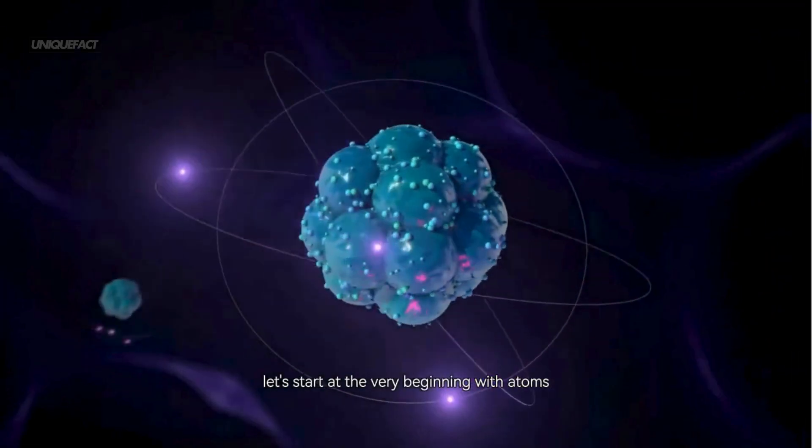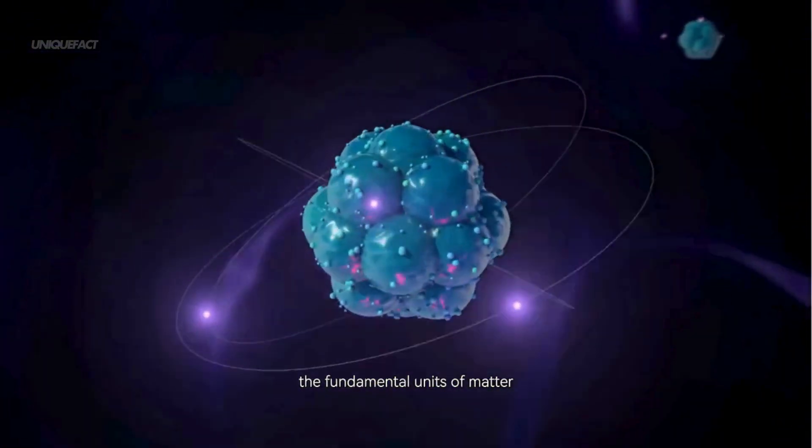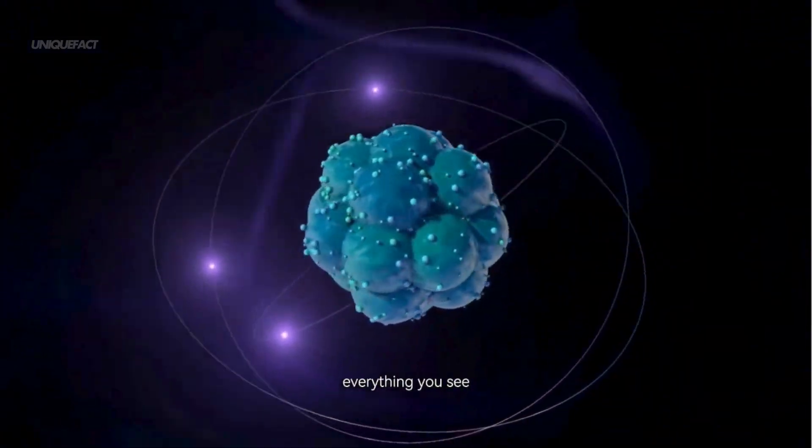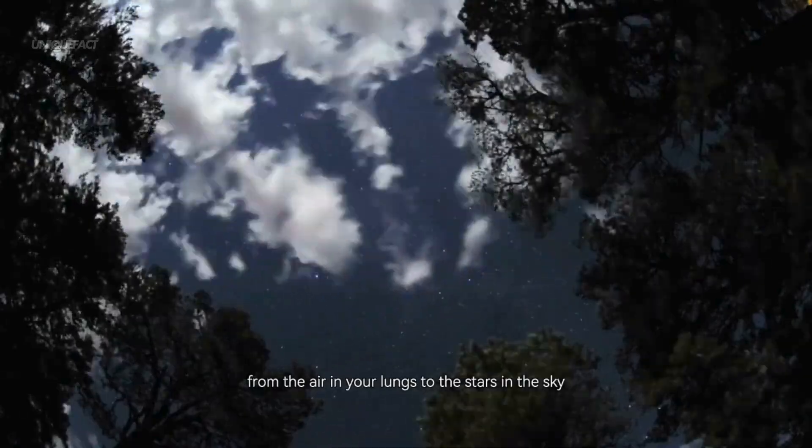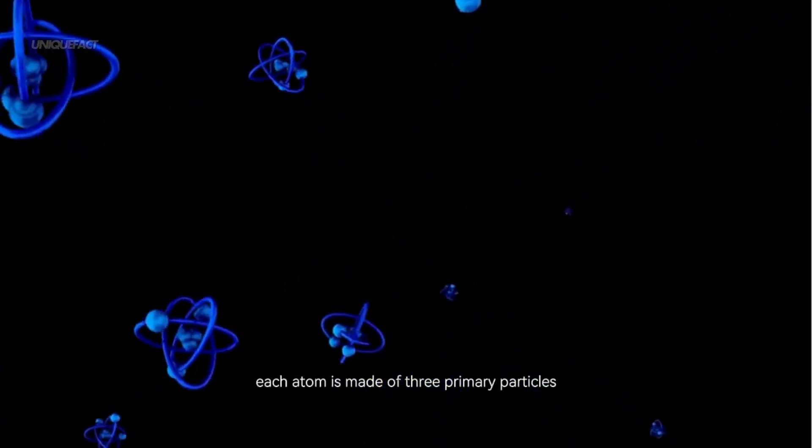Let's start at the very beginning with atoms, the fundamental units of matter. Everything you see, touch, and even breathe is made of atoms. From the air in your lungs to the stars in the sky, each atom is made of three primary particles.